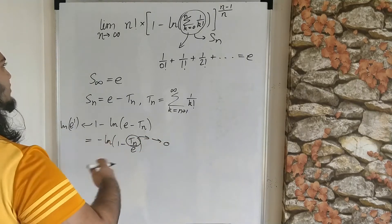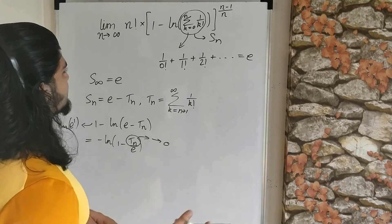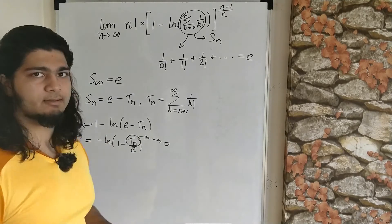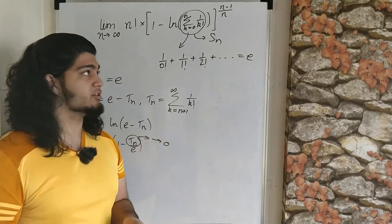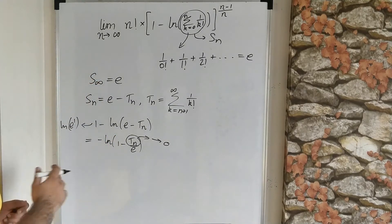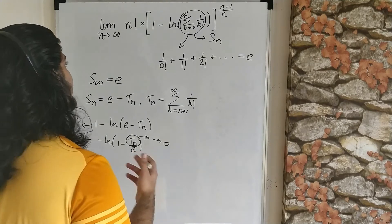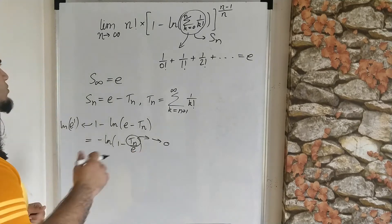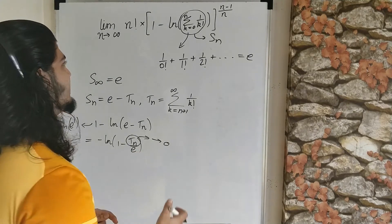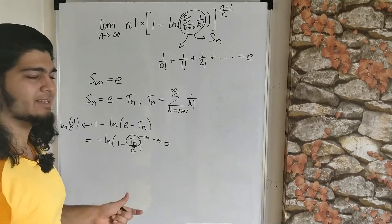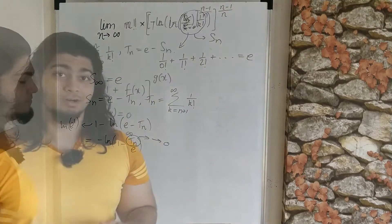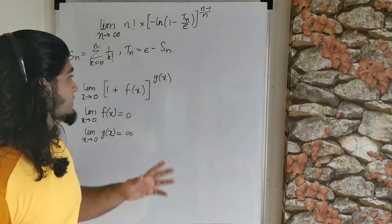Now we have two choices: we can expand this using the Taylor series of ln, or we can play around with it a bit more. Both options lead to the same thing, but I'll go with the latter because it's slightly more rigorous. So this is what we have so far.